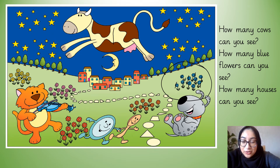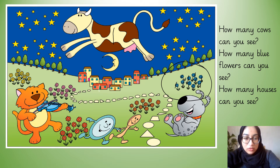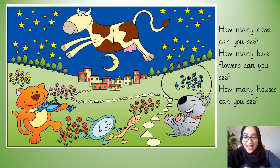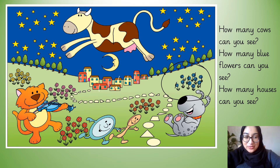How many houses can you count? Can you count them on your big picture? Let's count them together. One, two, three, four, five, six, seven, eight, nine, ten. I can see ten houses. Well done.